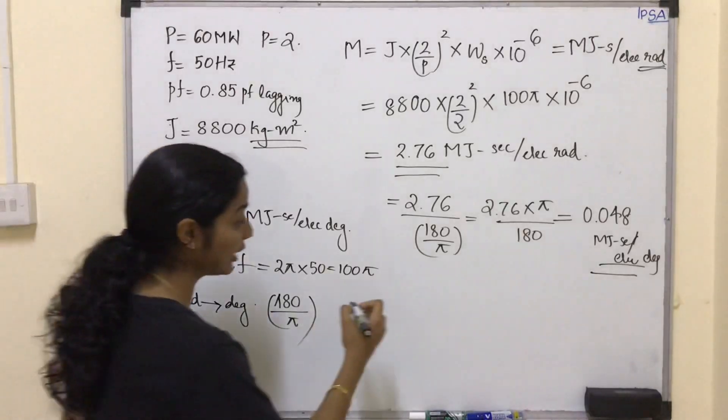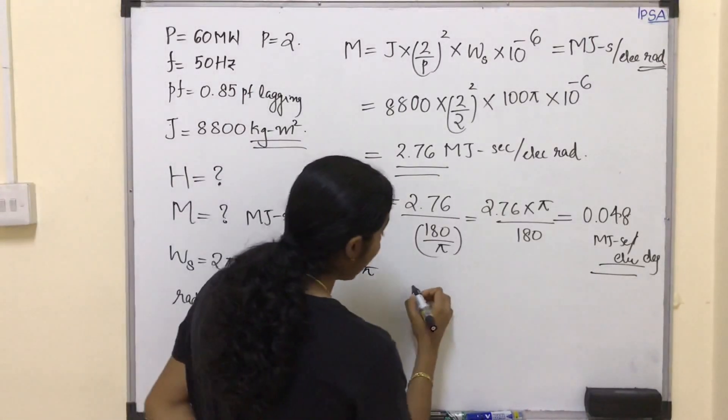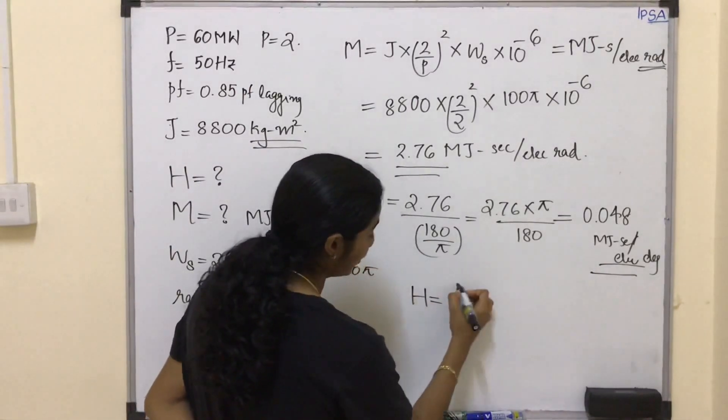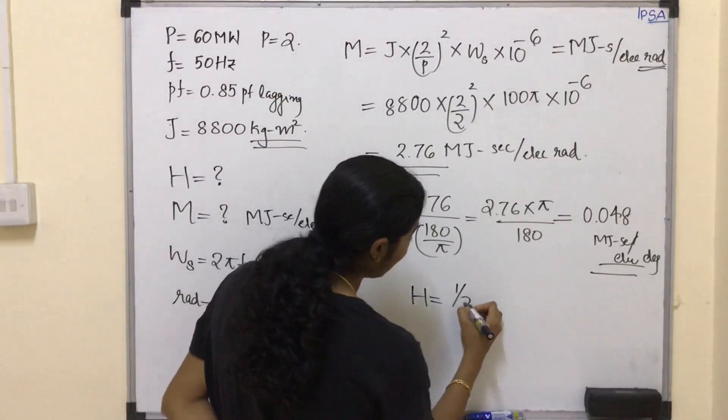Now let's calculate the value of H. H is equal to half M times ωs divided by G.